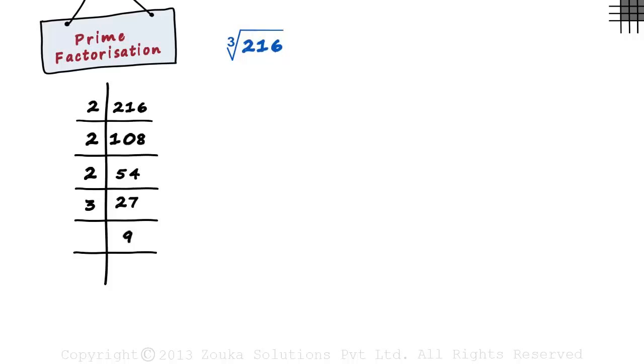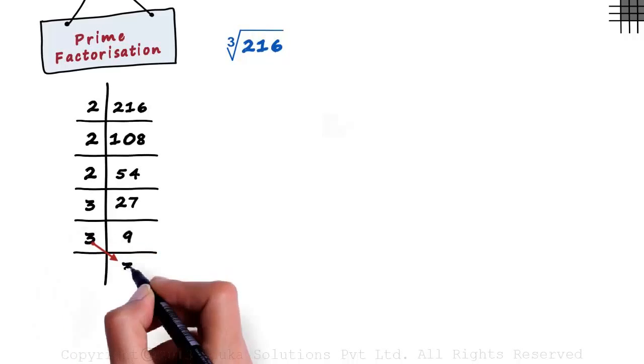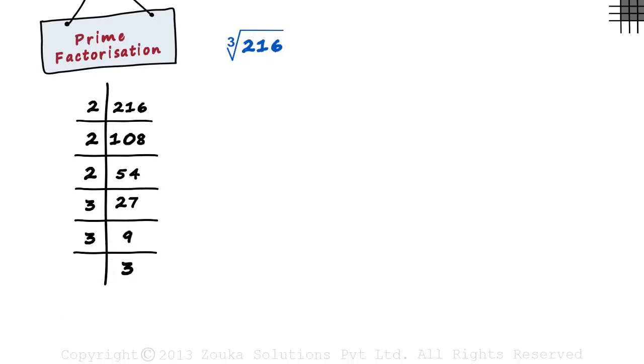3 multiplied by 9 equals 27. And we know that 9 equals 3 multiplied by 3. This is where we stop. We stop when we see a prime number here. So we have reduced 216 into its prime factors.